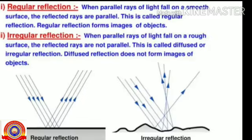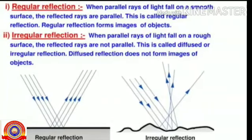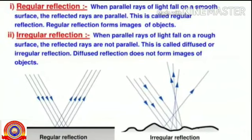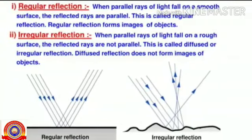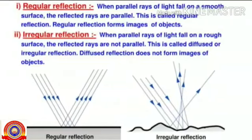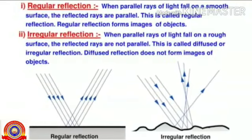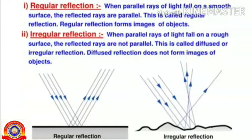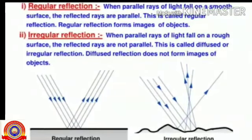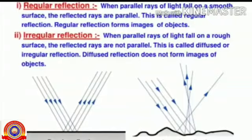Now let's see the definitions. Regular reflection: when parallel rays of light fall on a smooth surface, the reflected rays are parallel — this is called regular reflection, and it forms images of objects. Irregular reflection: when parallel rays of light fall on a rough surface, the reflected rays are not parallel — this is called irregular reflection or diffused reflection, and it does not form images of objects.